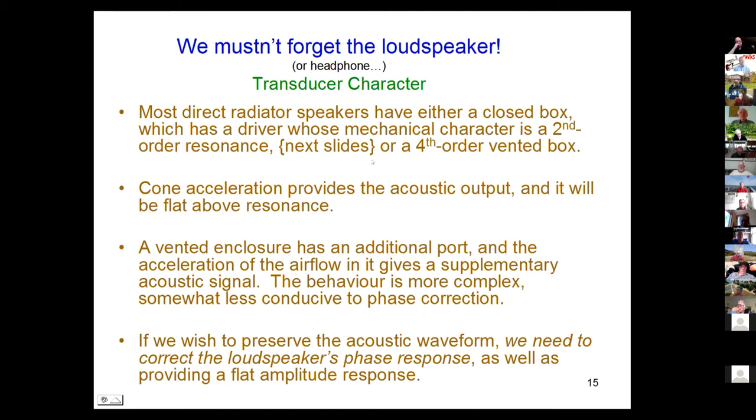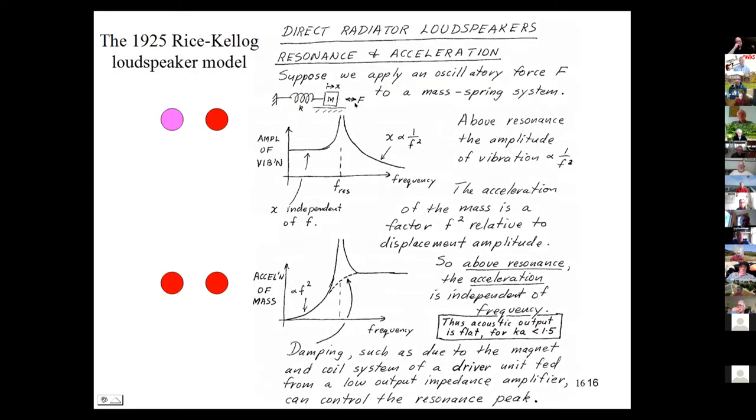Here's the way a loudspeaker works. If you think of the coil giving a force to this mass, which is the cone, and the suspension and air in the box, then at very low frequencies it will have an amplitude independent of frequency. If it's damped, it will go across like this.